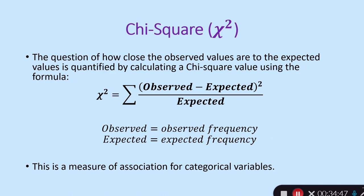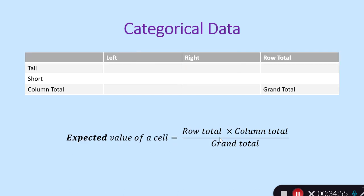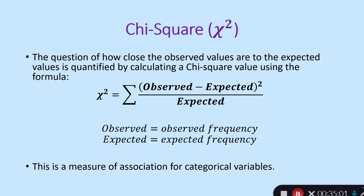Once we have worked out expected counts given our sample size, we compare them to the observed counts using chi-square. The chi-square formula is: X-squared equals the sum of (observed minus expected) squared divided by expected, where observed is the actual frequency in our data and expected is what we'd expect under the null hypothesis. This is a measure of association for categorical variables.